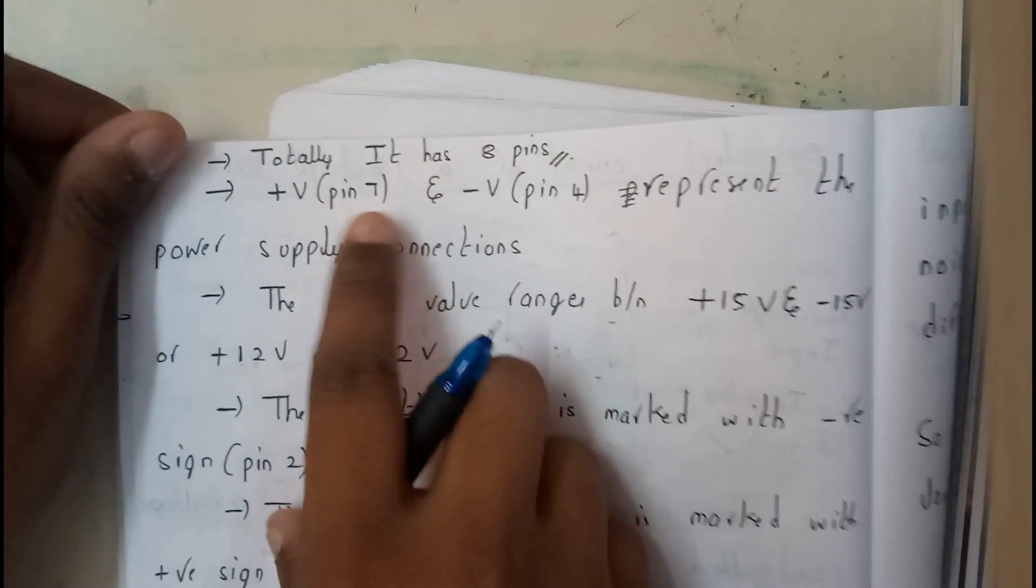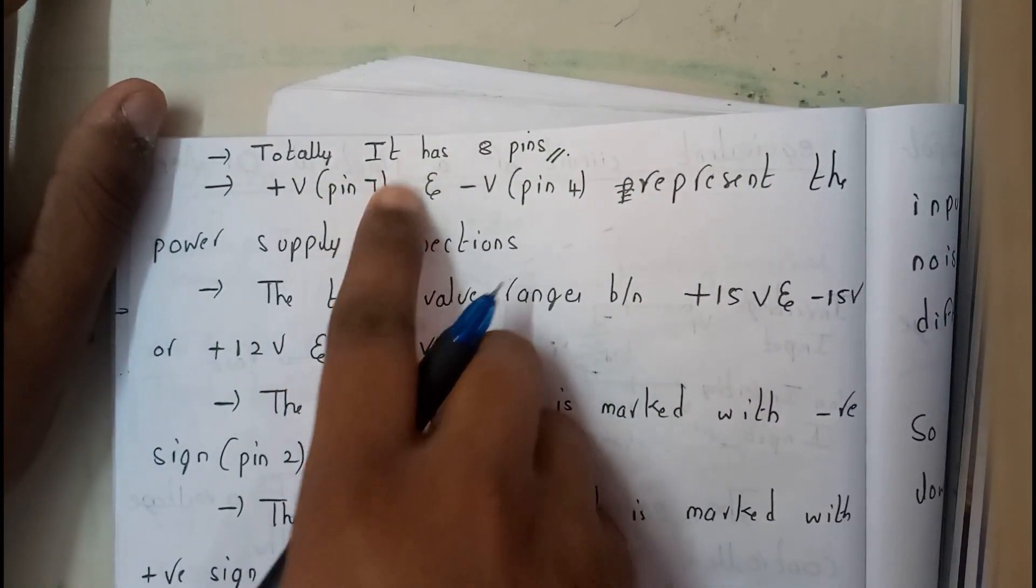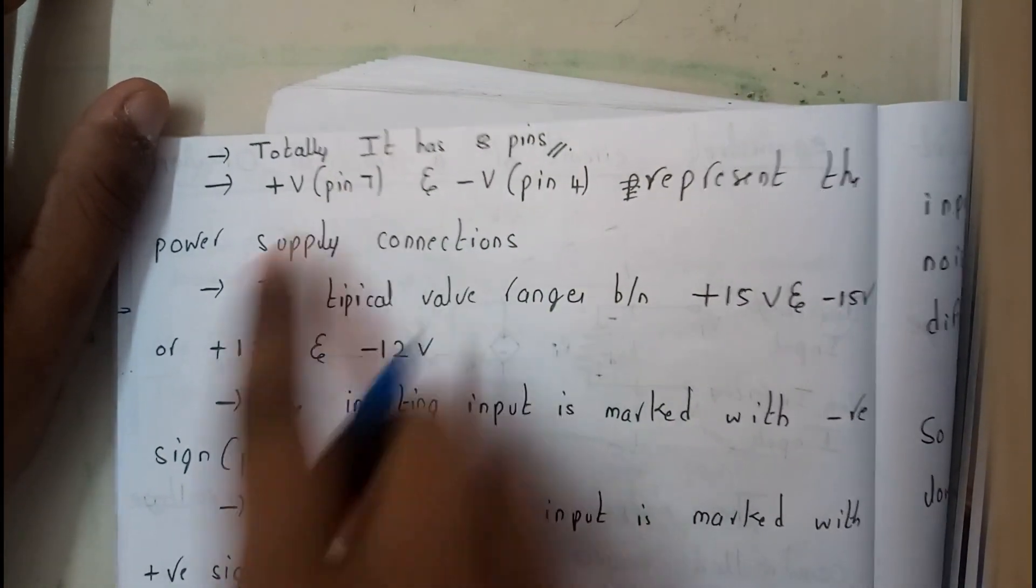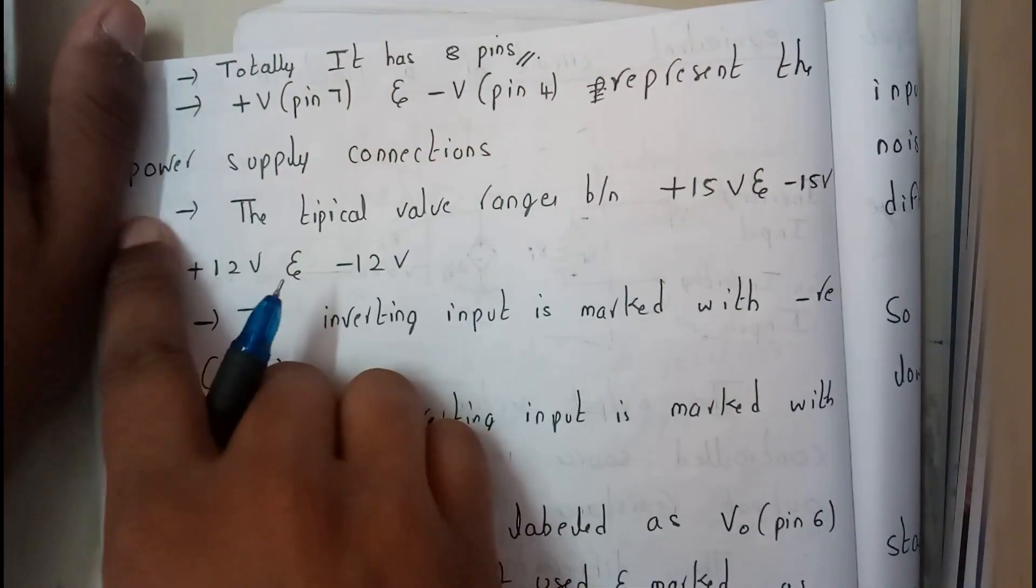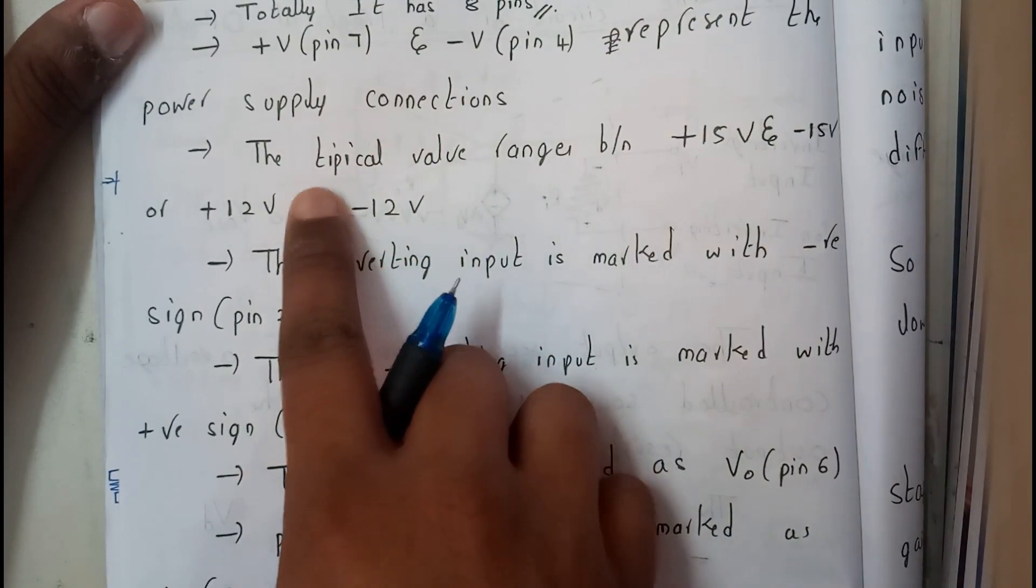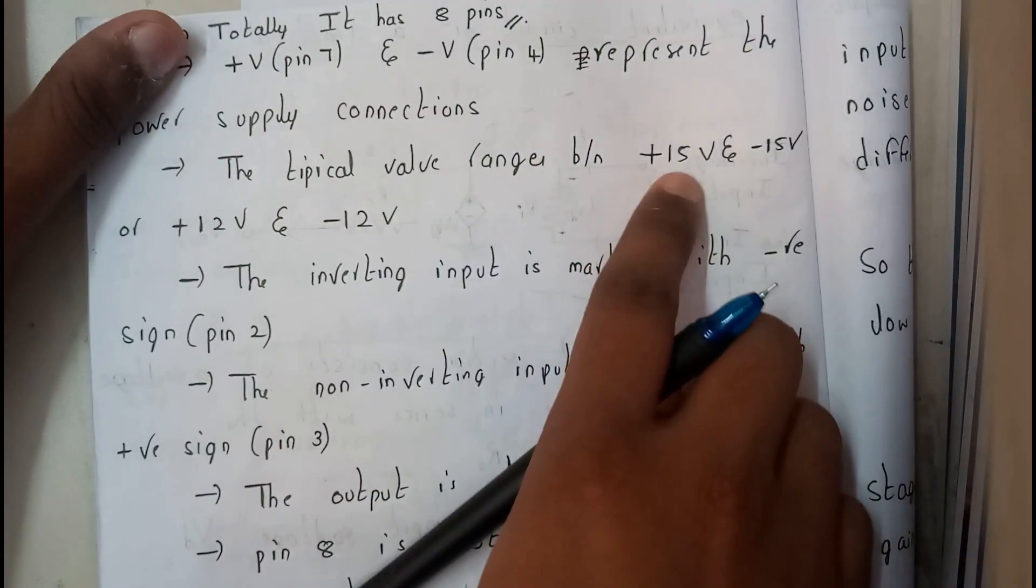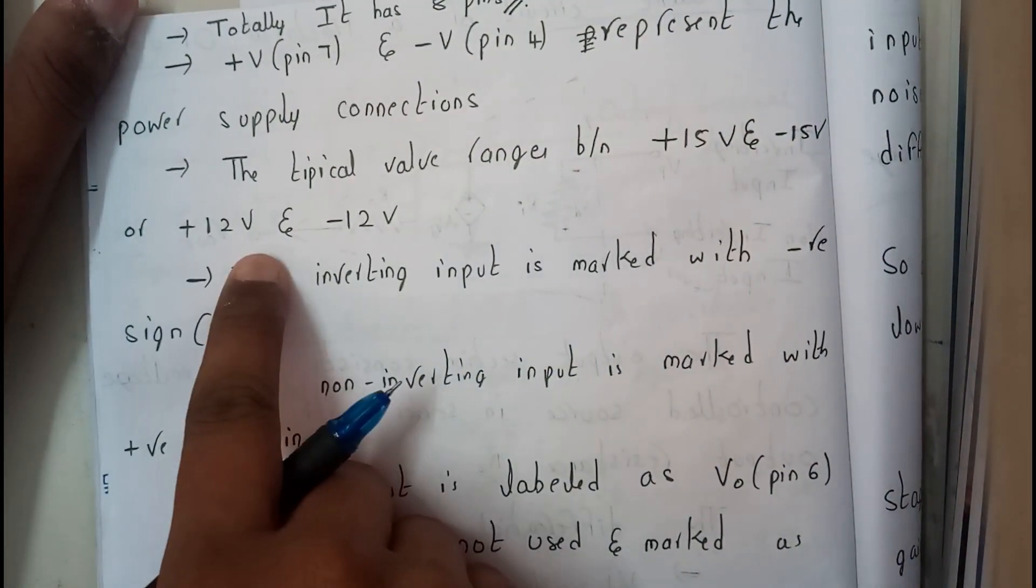Totally it has eight pins. Positive volts is given to the seventh pin, that is power supply. Negative power supply to the fourth pin represents the power supply connection. The typical value ranges between positive 15 to negative 15 or positive 12 to negative 12.